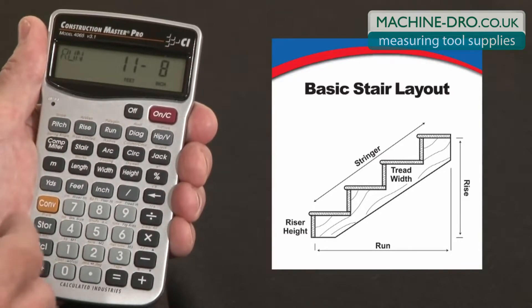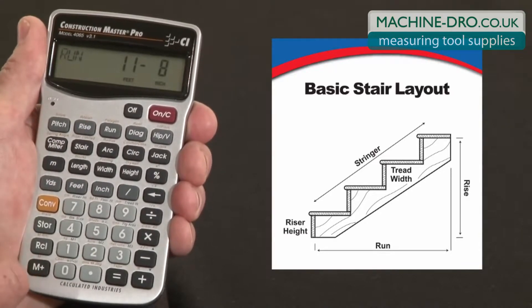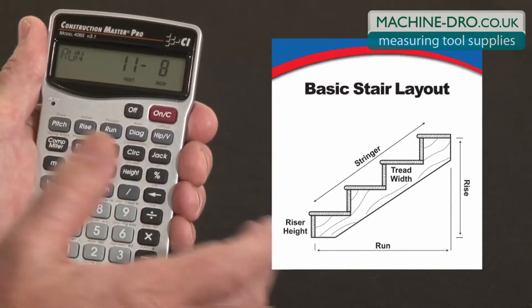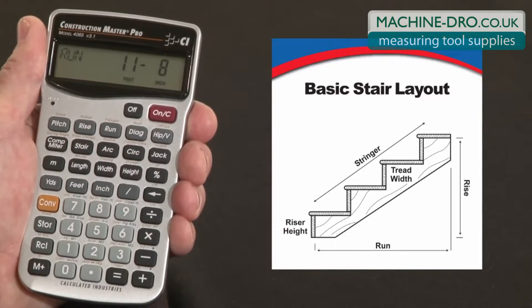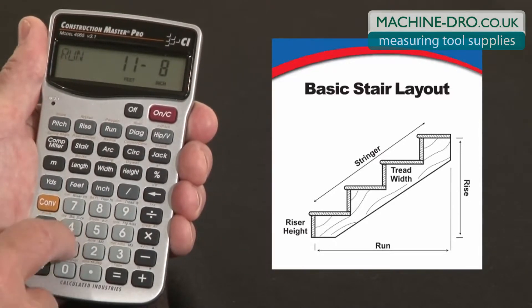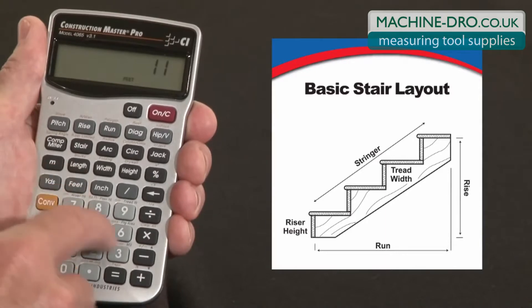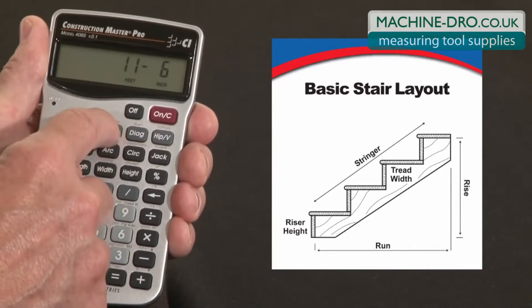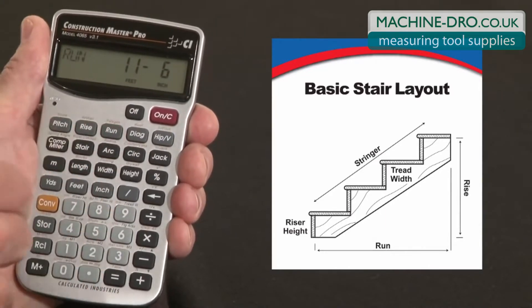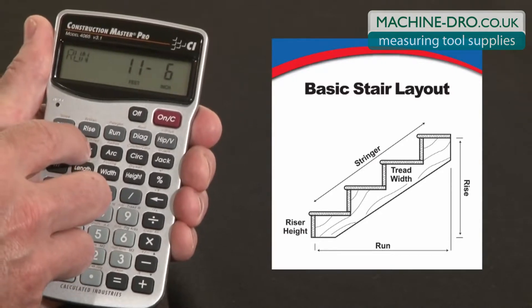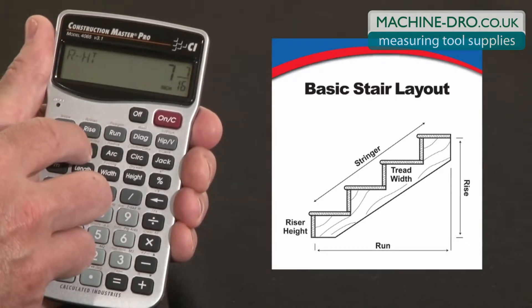Now in another situation — say you're building these stairs into a basement and you'll only have 11 foot 6 inches of horizontal run to work with. We would enter 11 feet 6 inches and call that the Run. The floor-to-floor drop or rise remains the same, so we come back to the Stair key and press it.